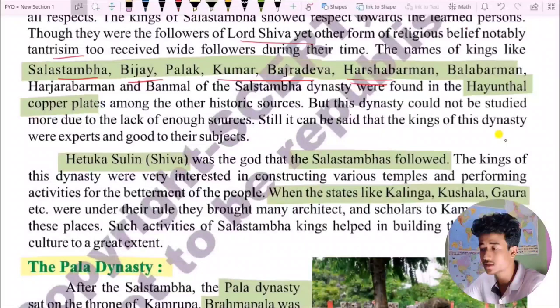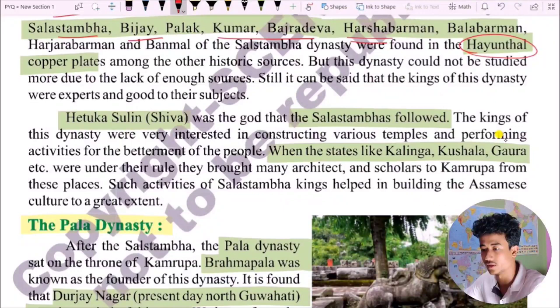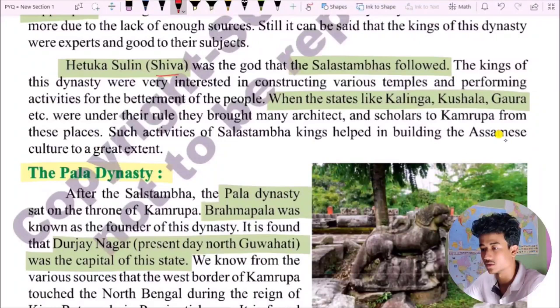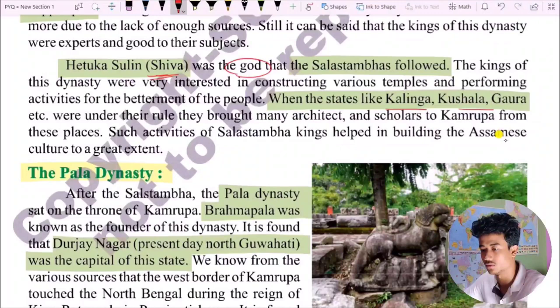The kings of the Salasthambha dynasty showed respect towards learned persons. They were followers of Lord Shiva, yet other forms of religious belief, notably Vaishnavism and Shaktism, also received followers during their time. The names of kings like Salasthambha, Vijayakumar, Vajradeva, Harshvarman, Balavarman, and Banman were found in the Hayunthal copper plates.